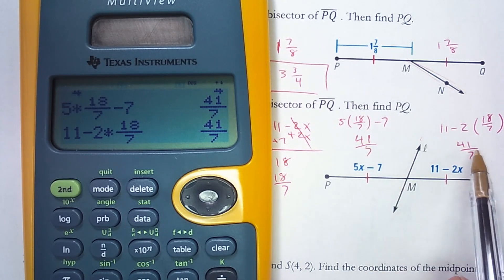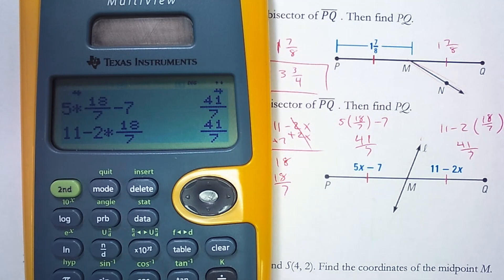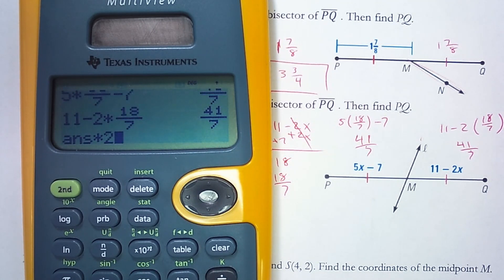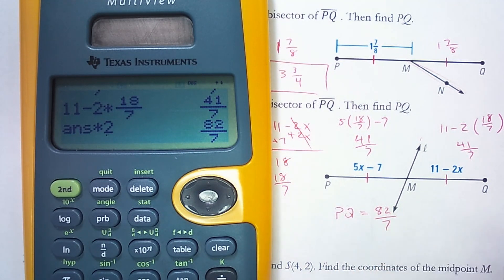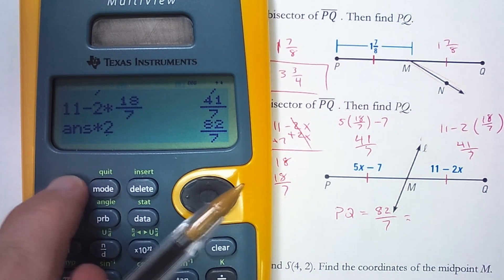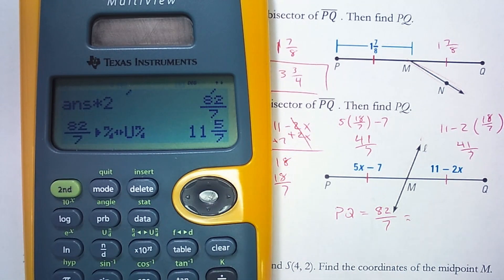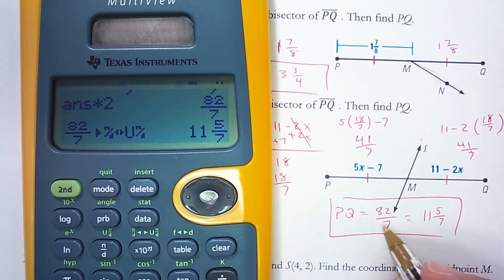So 41 sevenths plus 41 sevenths, which just means I can take this 41 sevenths and do times 2. And I get 82 sevenths, so PQ is 82 sevenths. Or I could write it as a mixed number, 11 and 5 sevenths. Either version of the answer will work.